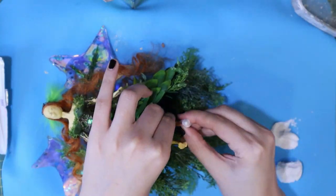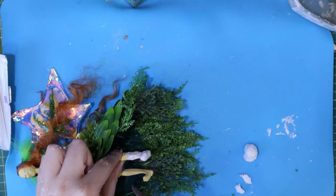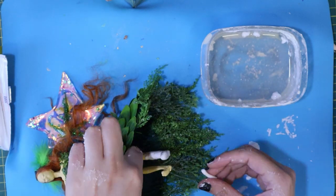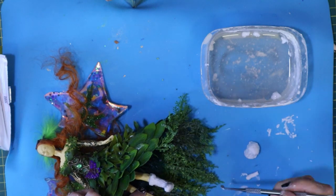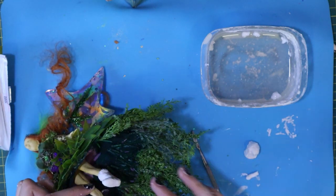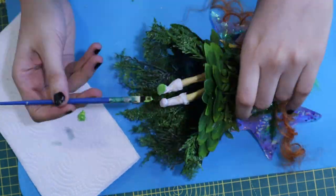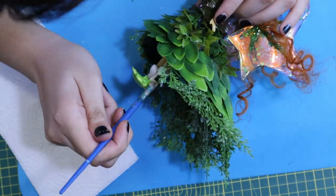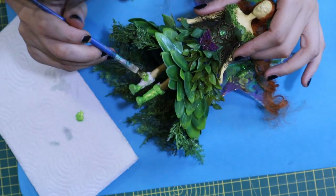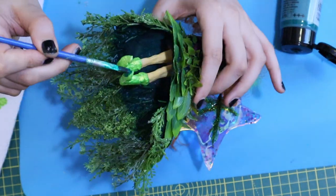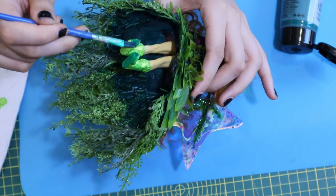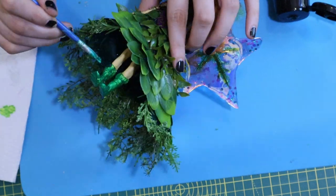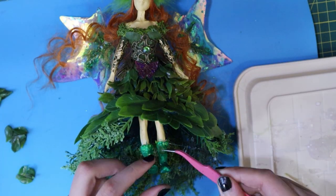To make boots I covered her feet in air drying clay. When it was dry I covered it with lighter and darker shades of green. Then I glued on tiny leaves.